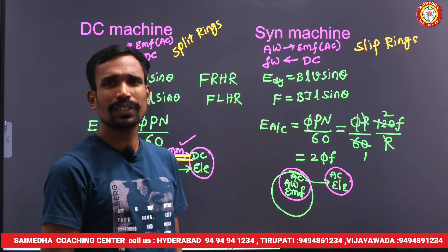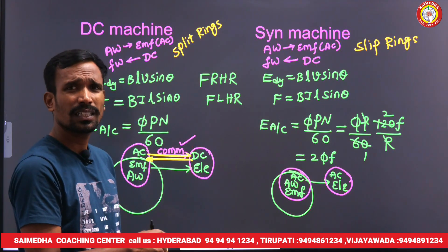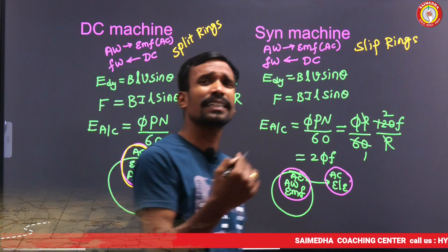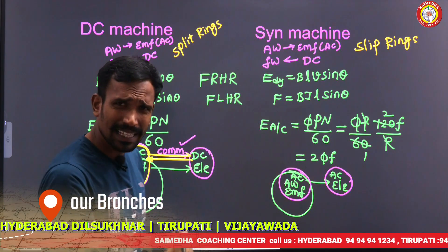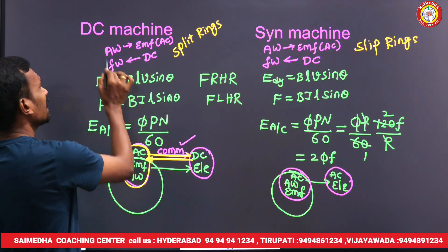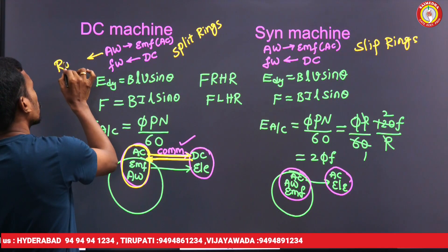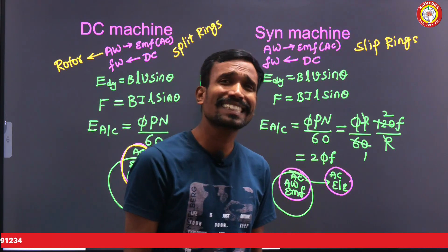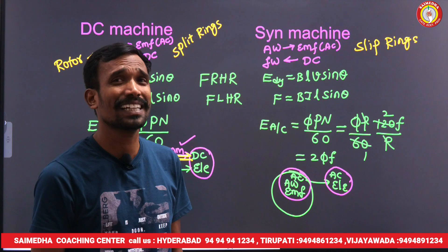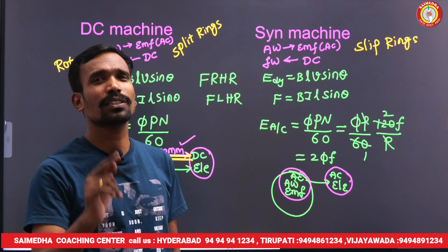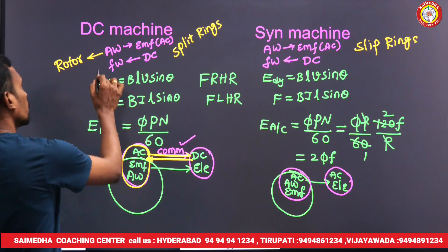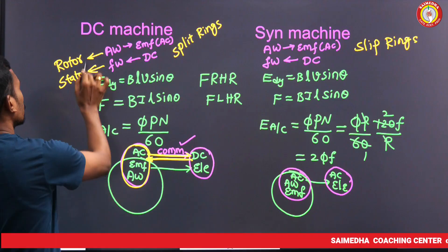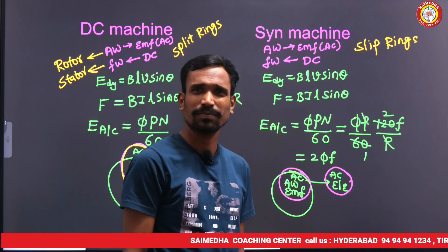The commutator must be on the rotor. If it is placed on the stator, there is no commutation action. If there is no commutation action, there is no DC machine. For the DC machine to work, the commutator must be on the rotor, which means the armature is on the rotor and the field winding is on the stator.